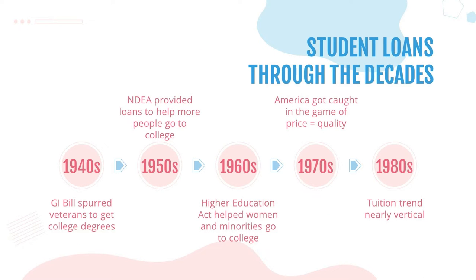Starting in the 1940s, college was for the elite — only about 600,000 folks were enrolled in 1919. But after World War II, the GI Bill was passed, which allowed federal grants for returning soldiers and eventually sent about 8 million soldiers to college.